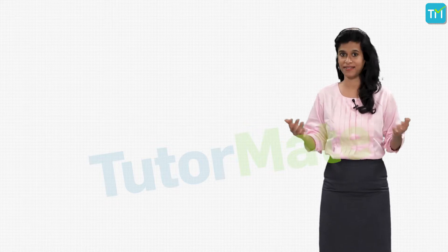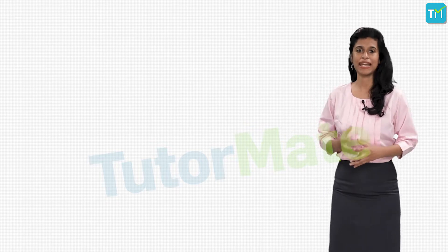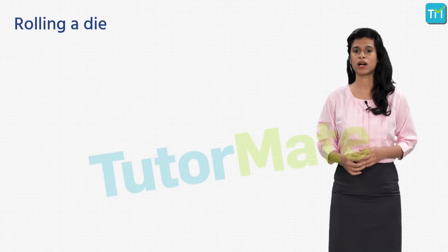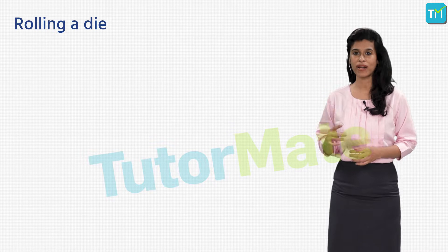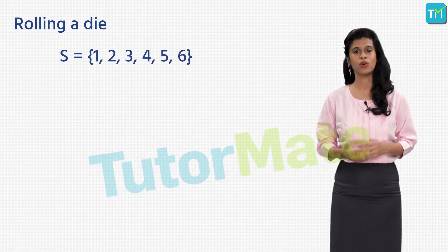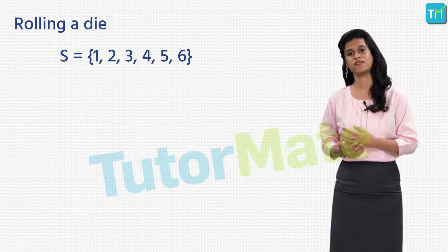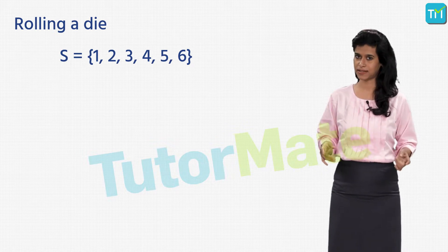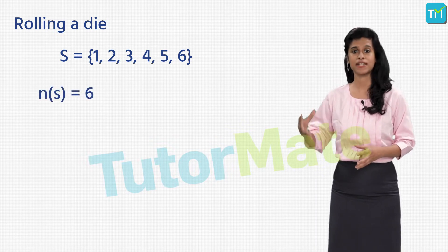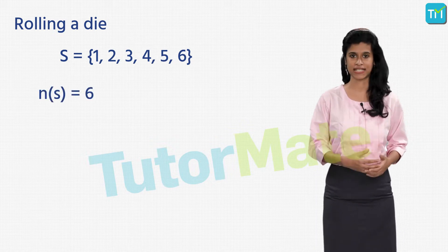Similarly, while playing ludo, every time we roll a die, the possible outcomes are numbers from one to six. So we write down S = {1, 2, 3, 4, 5, 6} all in curly brackets, and since the number of possible outcomes is six, we say n(S) = 6.